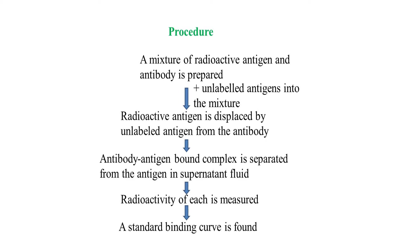To summarize the procedure: in the first step we prepare a mixture of radioactive antigen and antibody. In the second step we add the sample containing unlabeled antigens, which displace the radioactive antigen from the antibodies and bind to them. The antigen-antibody complex is then separated from the antigen in the supernatant fluid, radioactivity of each is measured, and a standard curve is formed.